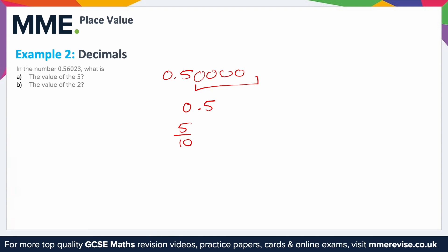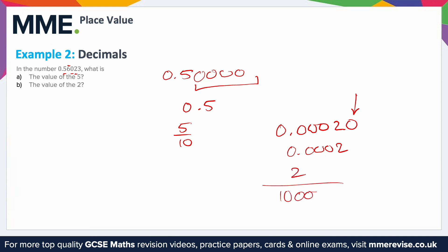What is the value of the two? Using the same approach, we get 0.00020 — making everything else zeros. We can ignore the trailing zero, so the answer is 0.0002. Alternatively, identifying the columns: the five is in the tenths, the six is in the hundredths, the zero is in the thousandths, so the two must be in the ten-thousandths — giving two over ten thousand, which is one followed by four zeros.